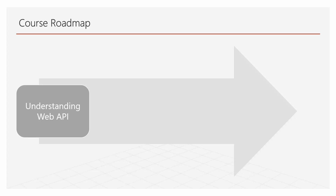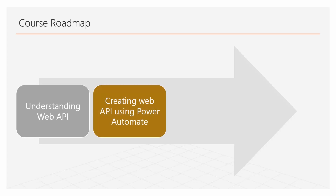After we understand what we are going to build, we go through creating the Web API using Power Automate. Flow provides a very easy-to-use environment to create a Web API, as long as you know the game rules — which we learned in the understanding Web API section. Here we start building our own Web APIs, which is going to be very easy yet exciting, especially for people who haven't done this before. Developers who have done this before will just need to match their previous knowledge with the elements and components available here.